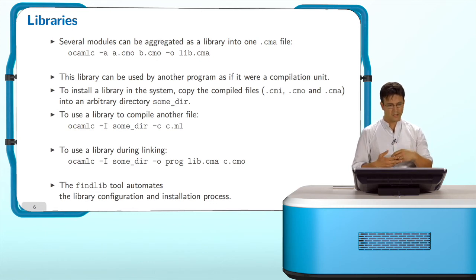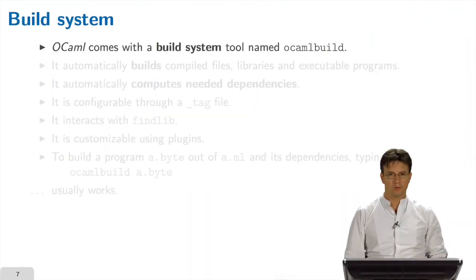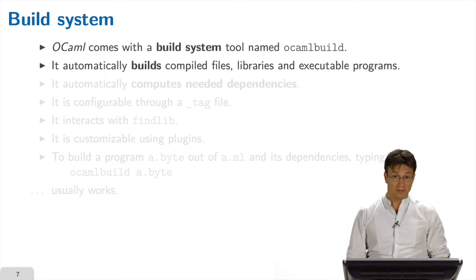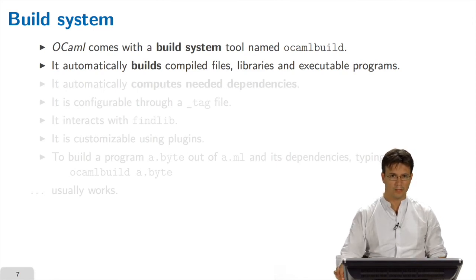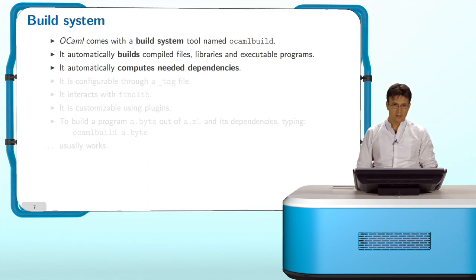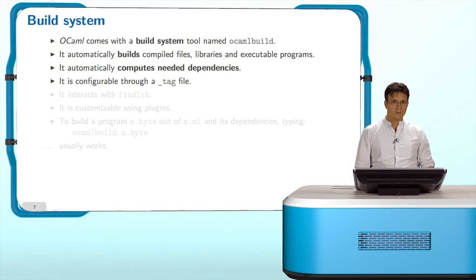OCaml comes with a build system tool named OCamlBuild. Its role is to build compiled files, libraries, executable programs, anything that can be produced by the compiler. What is interesting is the fact that OCamlBuild computes for you the dependencies between the modules. It is also configurable using a file that will describe the libraries that you want to use to compile your program.